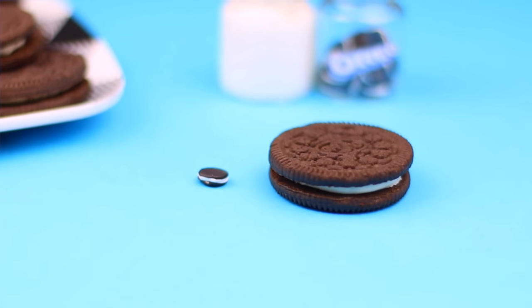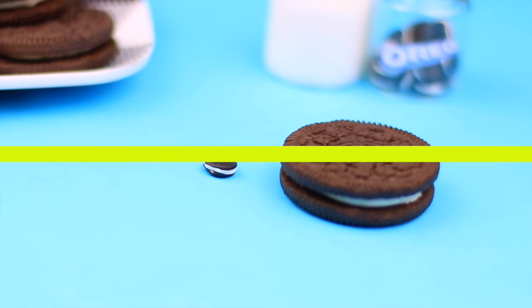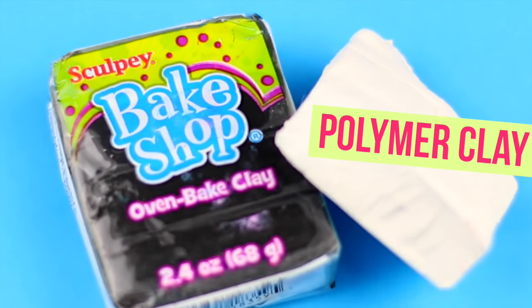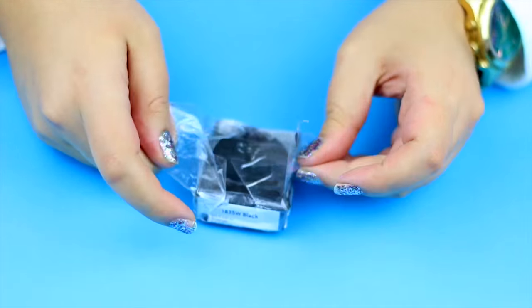This is a super basic tutorial for beginners to make these mini Oreos. We don't need any mold, you will only need black and white polymer clay.